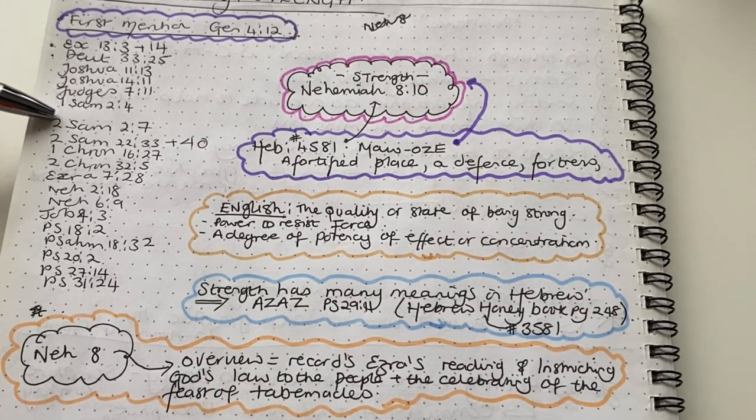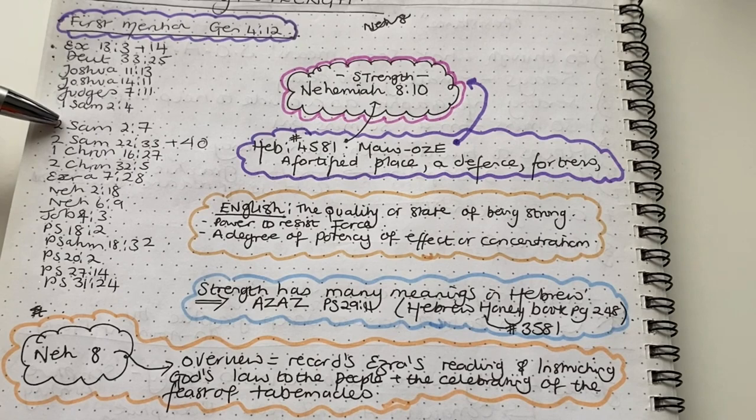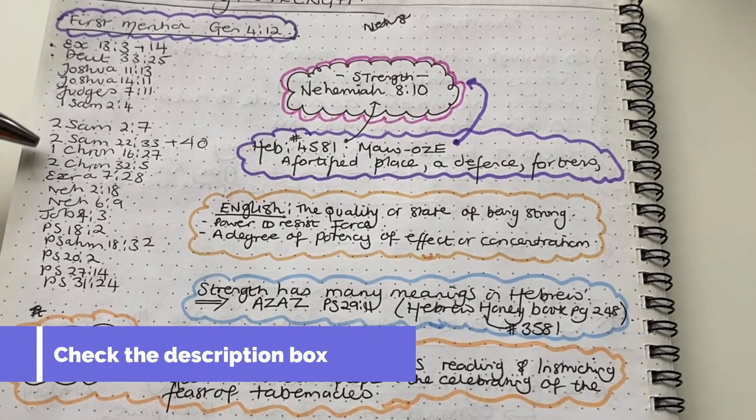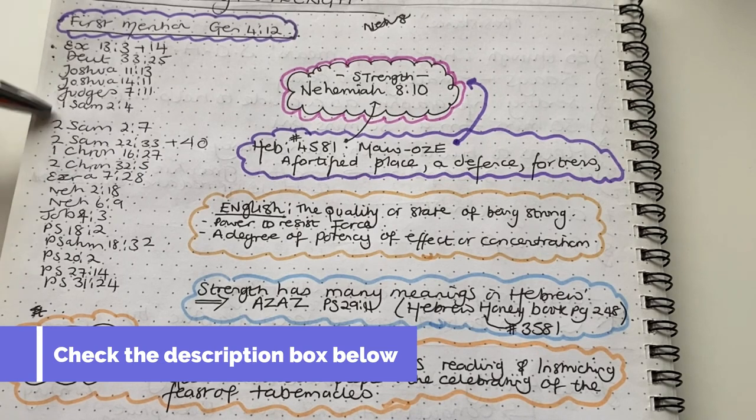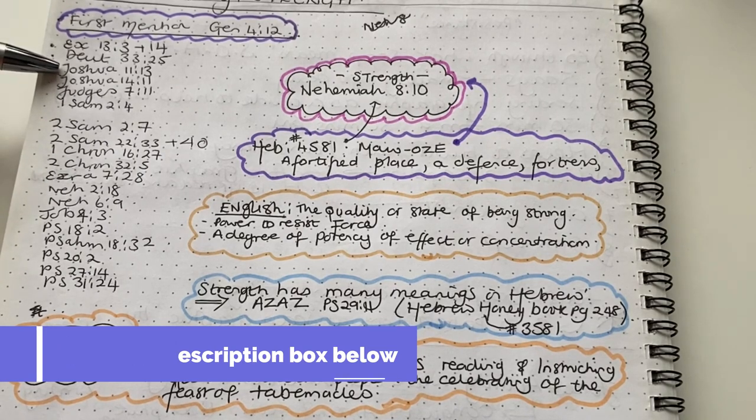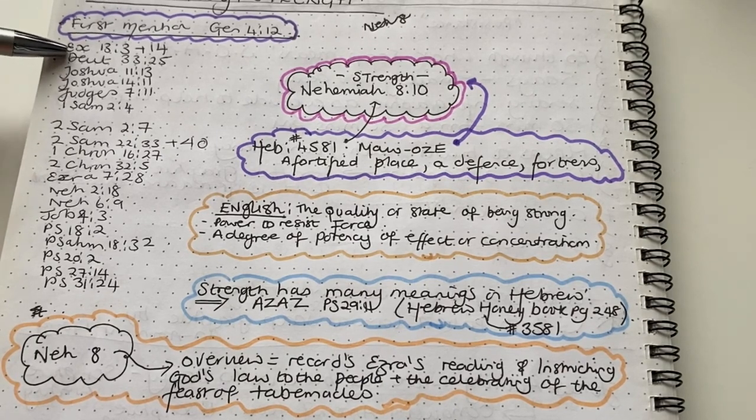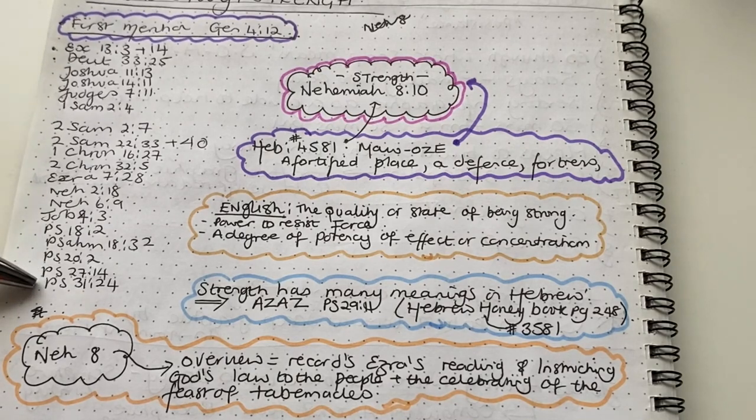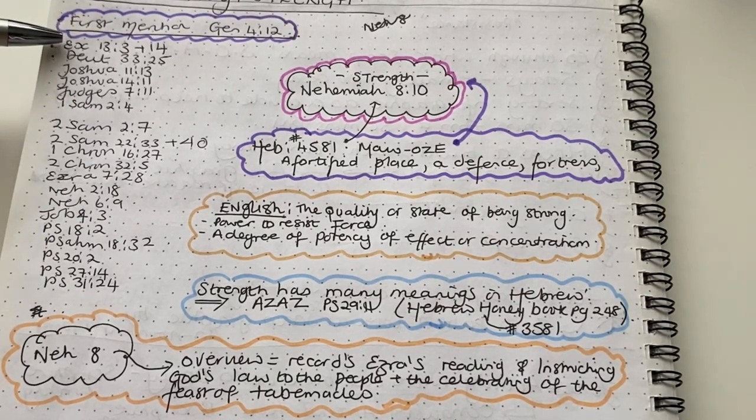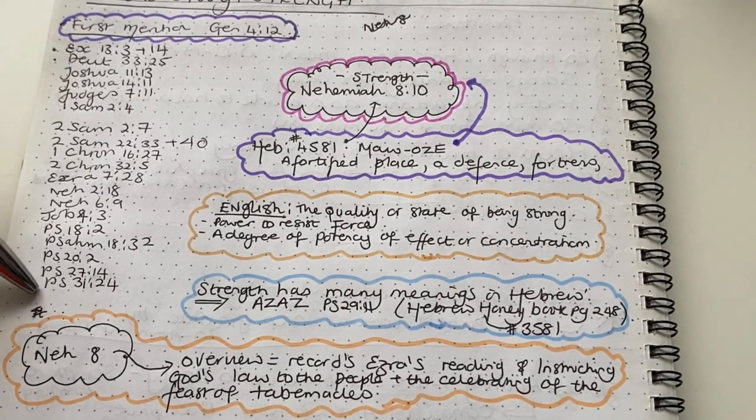I'll either put it in a graphic or it will be at the bottom in the description box below because there's quite a few. And I'll either put it in a graphic that you can download or I'll just put them in the description box below. But there are a lot of verses here. And this was just some that I wrote out from Exodus, and I just did it to Psalms. But I'm going to get some verses from the New Testament as well, based on the word strength.